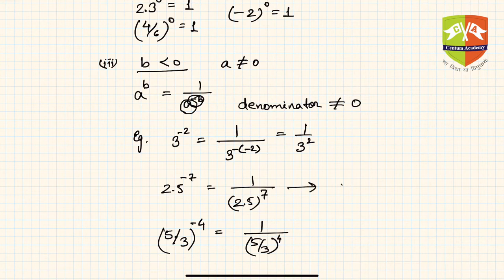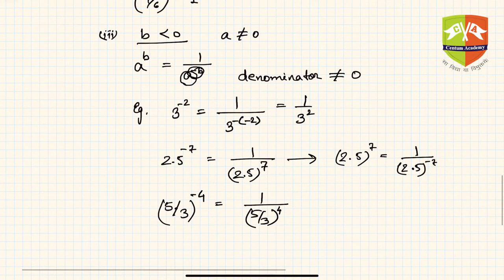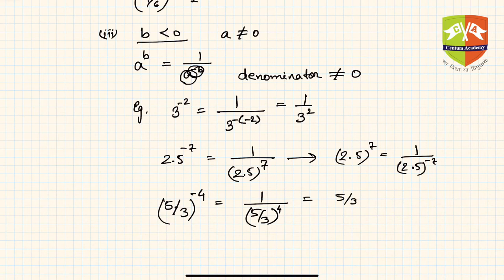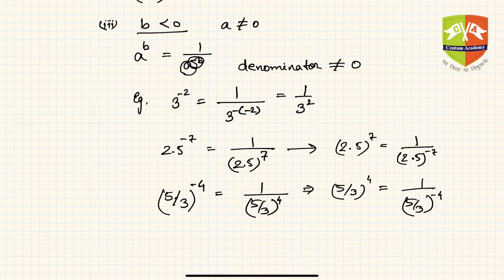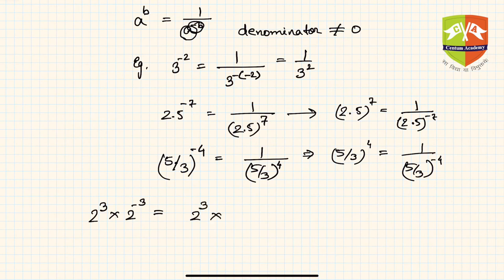By cross-multiplying you can also see 2.5^7 = 1/2.5^(-7), and (5/3)^4 = 1/(5/3)^(-4). If there is a negative exponent you want to make positive, you reciprocate the entire expression. For example: 2^3 × 2^(-3) = 2^3 × (1/2^3) = 1.